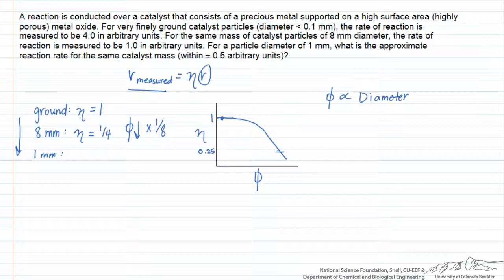That means the Thiele modulus should be 1/2 when we decrease the catalyst diameter to 1 millimeter — we go down by a factor of 8. Reading off the plot, our schematic shows it is close to 1. Reading off a real plot, the effectiveness factor is very close to 0.9 or even slightly above that for a Thiele modulus of 1/2.